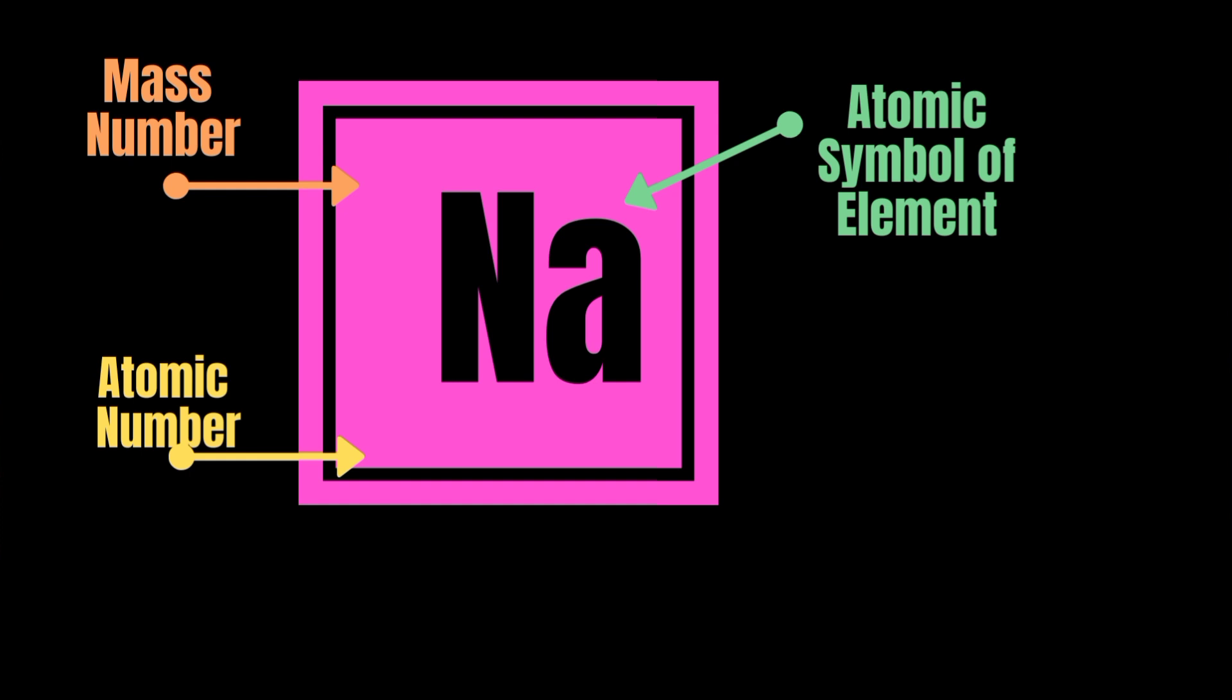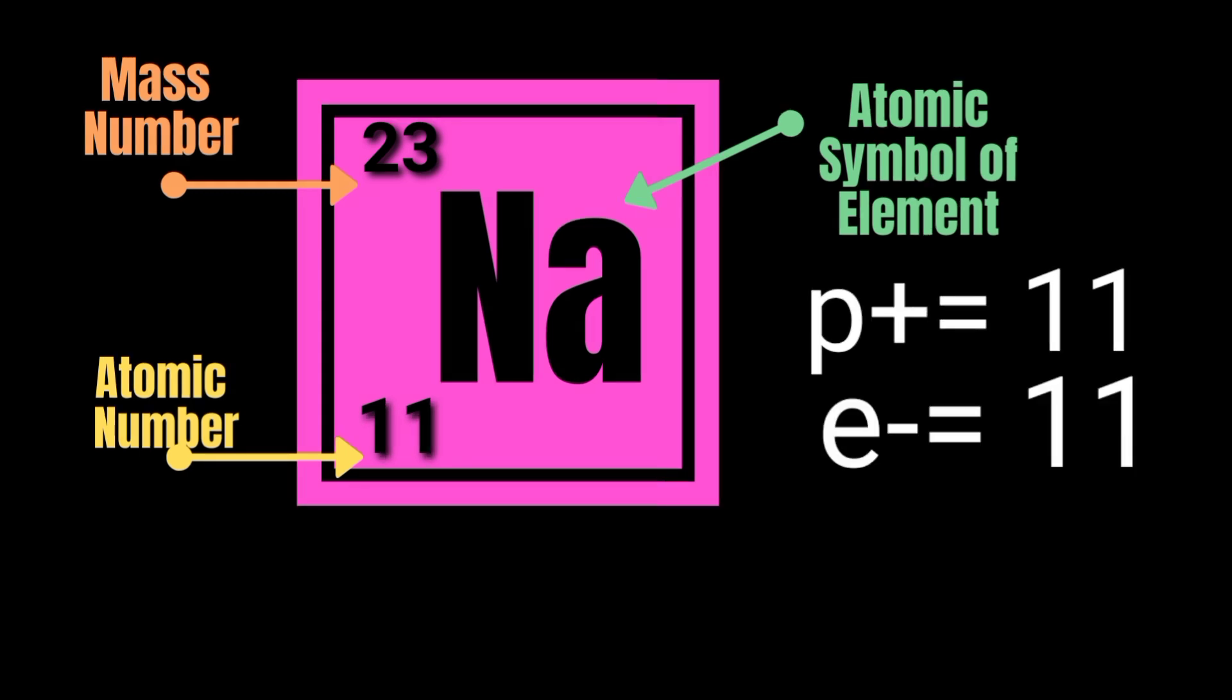Another example, element sodium. The element symbol is Na. The atomic number is 11. With an atomic number of 11, sodium has 11 protons. Since the number of protons must be the same as the number of electrons, it has also 11 electrons. How about the neutrons? Again, to compute for the number of neutrons, subtract the mass number from the atomic number. 23 minus 11 equals 12. Therefore, sodium has 12 neutrons.